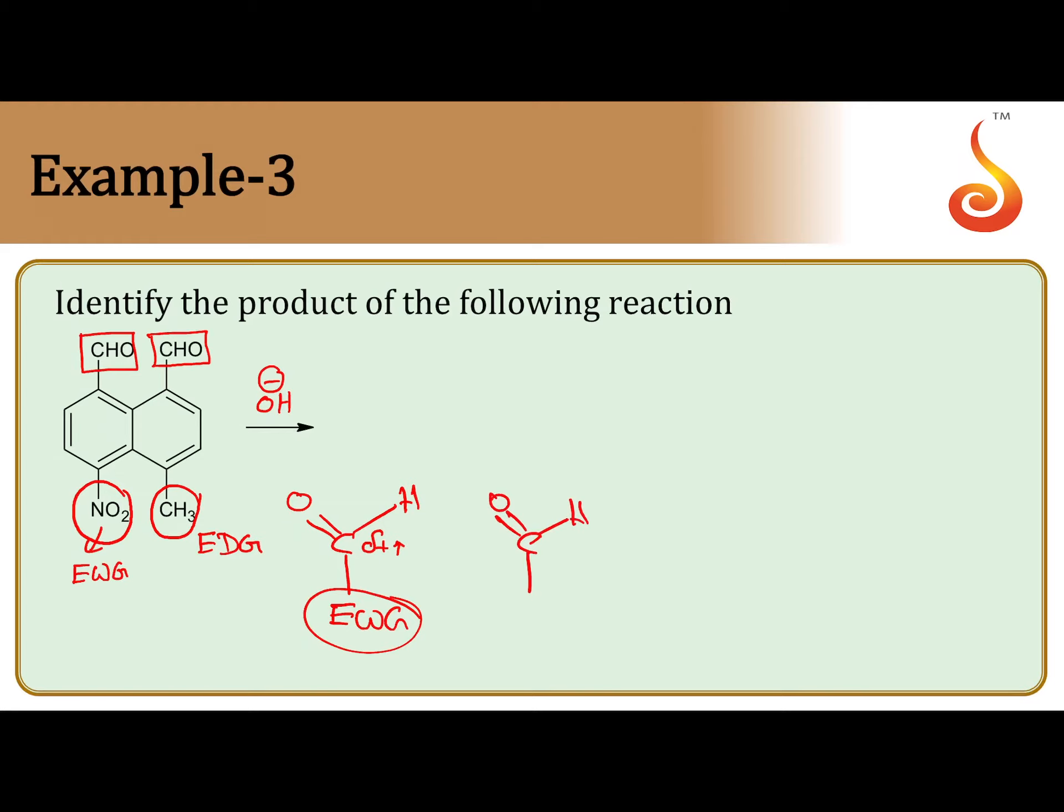So in the first step, OH⁻ has to attack at one of the two carbonyl carbons. Obviously, as the steric hindrance around both carbonyl carbons remain the same, OH⁻ will prefer to attack at the carbonyl carbon which has more magnitude of positive charge.